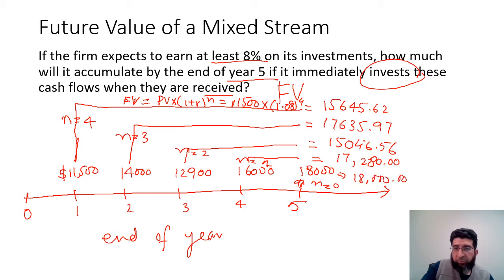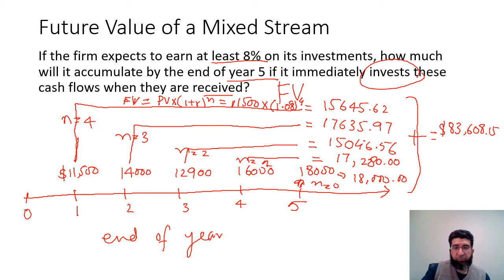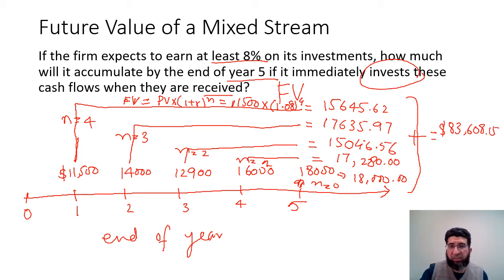When we add all of them together, we get a total future value of $83,608.15. This is how we calculate the future value of a mixed stream.